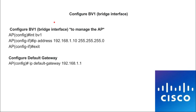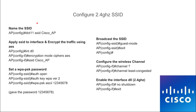The first thing we're going to do is configure the bridge interface, which is the Ethernet port. Type 'int' — which stands for interface — then 'BVI1'. Now you're in the sub-interface. Type 'ip address' then '192.168.1.10' — I used .10 because that was available on my network, but it can be anything within your network. Then type the subnet mask '255.255.255.0', then type 'exit'. To configure the default gateway, type 'ip default-gateway' followed by your router's gateway address.